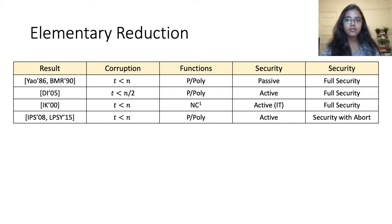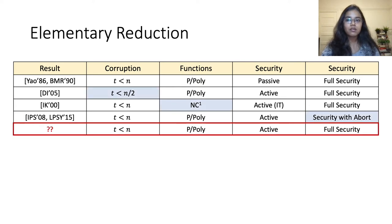Several existing non-interactive reductions in the literature are in fact elementary reductions. In the semi-honest setting, the two-party protocol of Yao and the constant-round multi-party protocol of Beaver, Micali, and Rogaway is an elementary reduction for all efficiently computable functions in the dishonest majority setting. In fact, the BMR protocol also has an actively secure version based on zero knowledge, but that protocol is interactive and non-black-box with respect to a PRG.